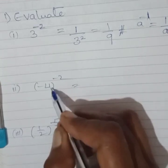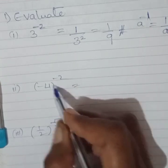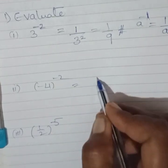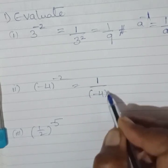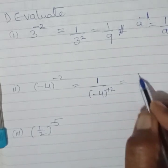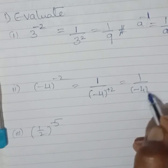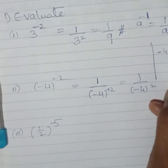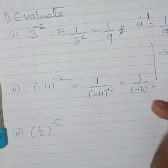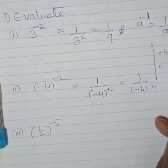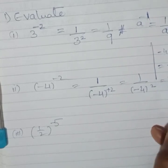In the same way, you have one more like this: minus 4 raised to minus 2. First of all, minus 4 raised to plus 2. Then, it is minus 4 raised to 2. So, minus 4 raised to 2 means minus 4 into minus 4. Minus times minus is plus, so this equals 16. So, this is 1 upon 16.